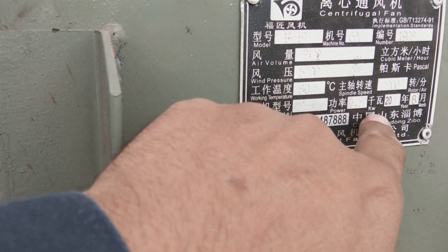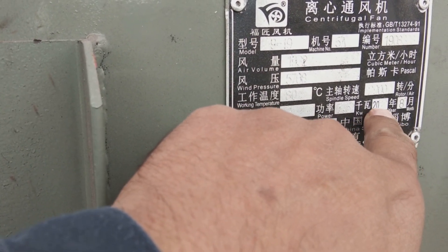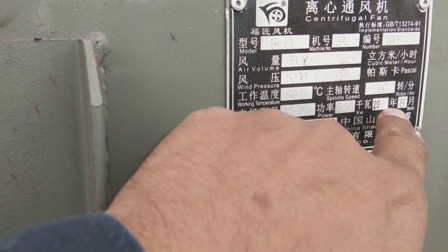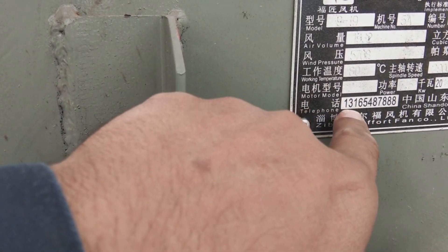Here's the manufacturing date: 2019, month of August. This is the serial number, and they've given their telephone number for this company, the manufacturer.